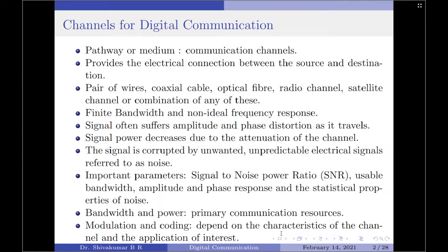The two channel characteristics — bandwidth and power — constitute the primary communication resources available to any designer. The details of modulation and coding used in digital communication systems depend highly on the characteristics of the channel as well as the application of interest. Other channel characteristics of particular concern are the degree to which amplitude and phase responses are determined, whether the channel is linear or nonlinear, and how free the channel is from external interference. In this session, I will discuss these issues in the context of five specific channels: telephone channels, coaxial cables, optical fibers, microwave radio, and satellite channels.